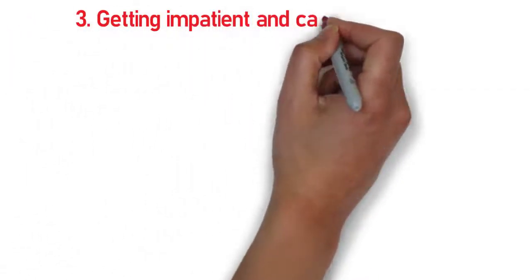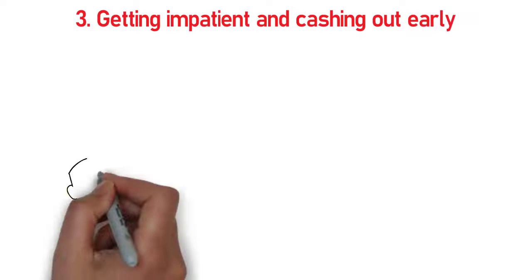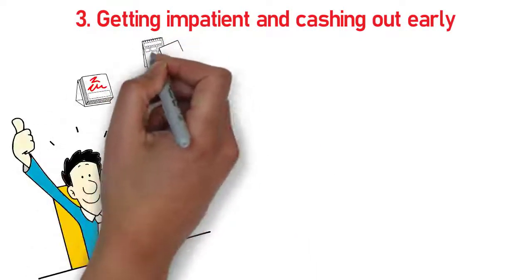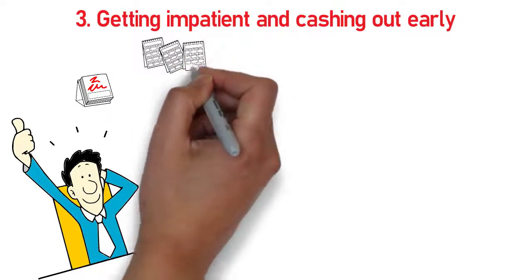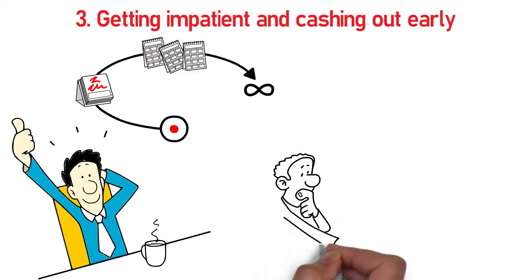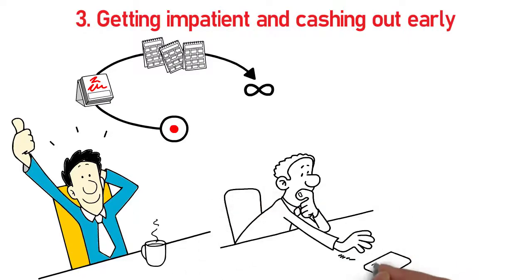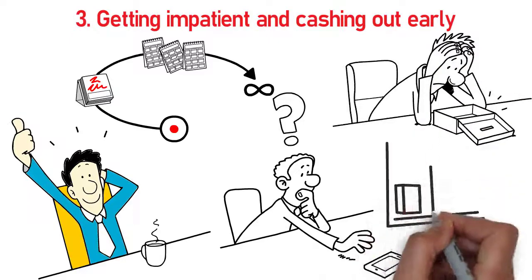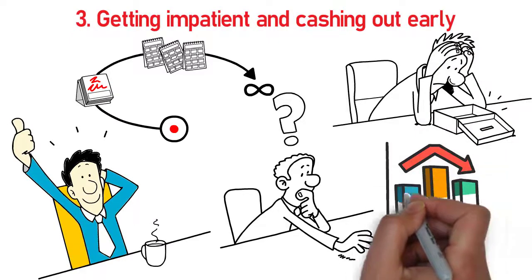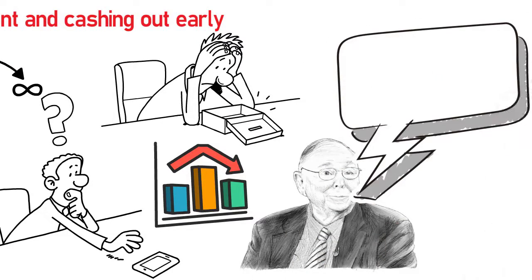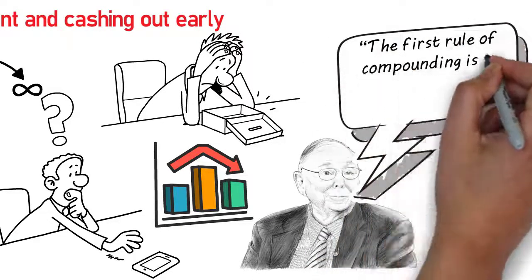Number three is getting impatient and cashing out early. Investing for the long term is always a good idea, but it can be difficult to stay invested in something that you won't see results for many years. Unfortunately, many people who may be in this predicament will cash out early and take money off the table. This is a mistake as it can drastically hinder your progress and leave you far behind where you should have been. Remember this Charlie Munger quote: the first rule of compounding is to never interrupt it unnecessarily.